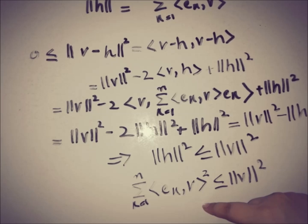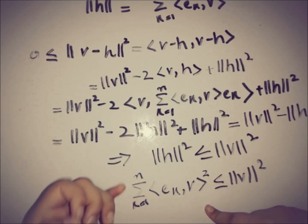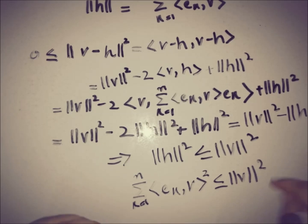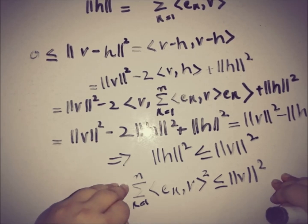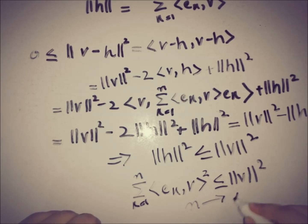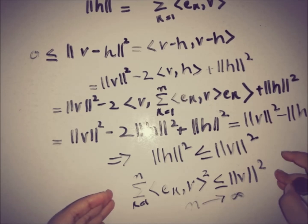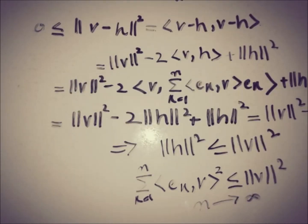This is not yet Bessel's inequality because the sum only goes from k = 1 to n. We extend it to k = 1 to infinity by taking n → ∞ from the orthonormal sequence. This gives us Bessel's inequality, using the orthonormal sequence, the inner product space, and the interrelation between the norm and inner product.